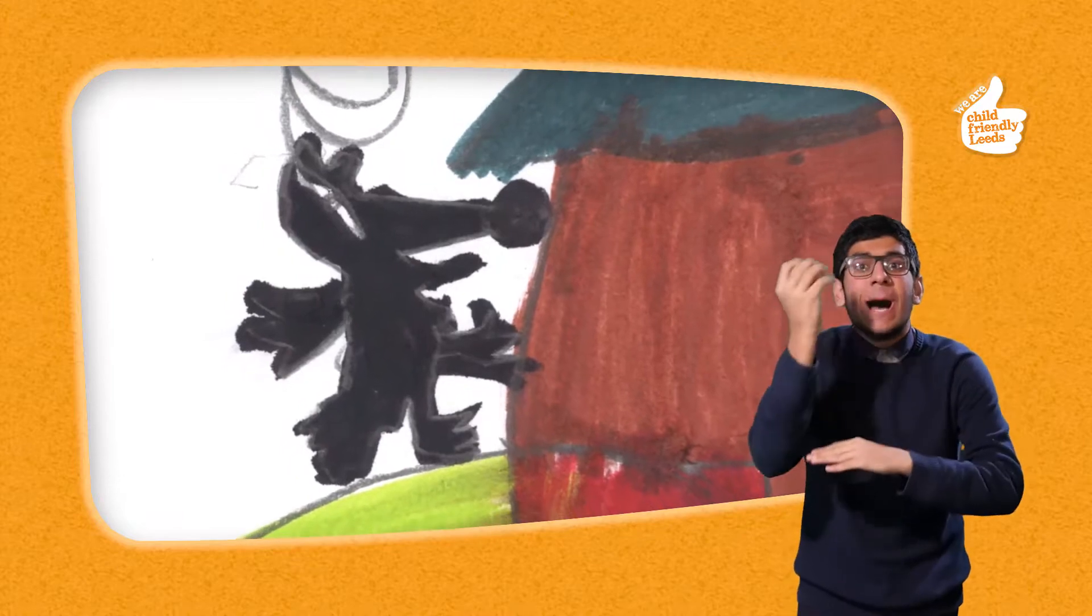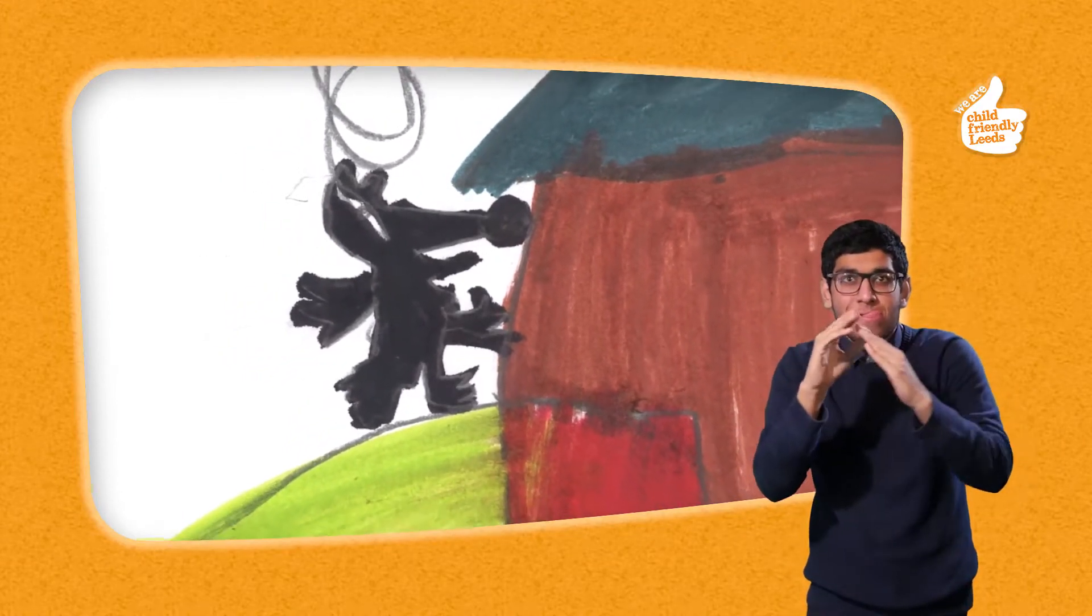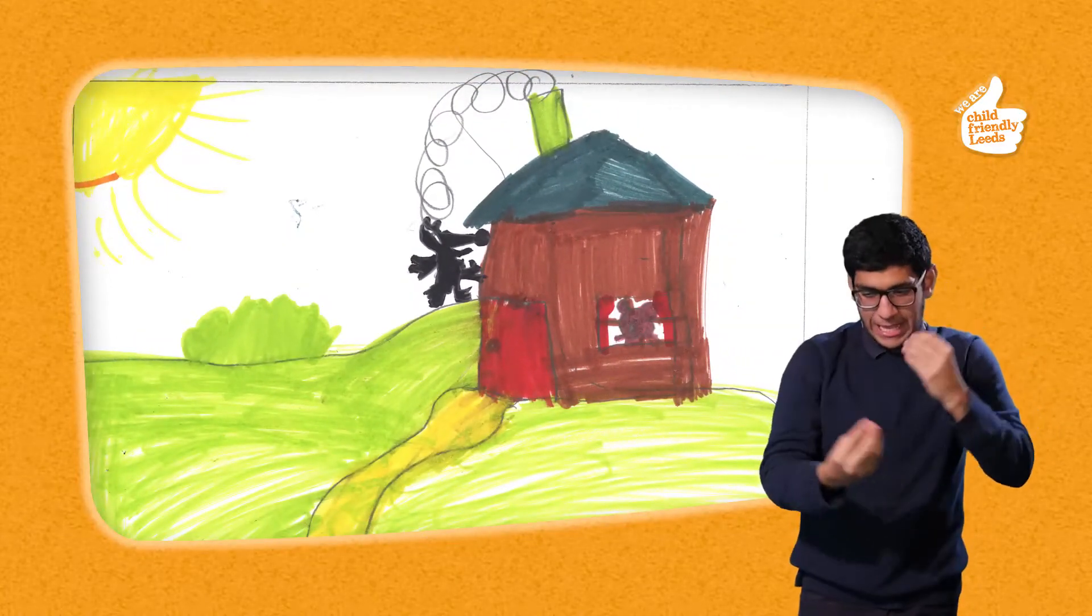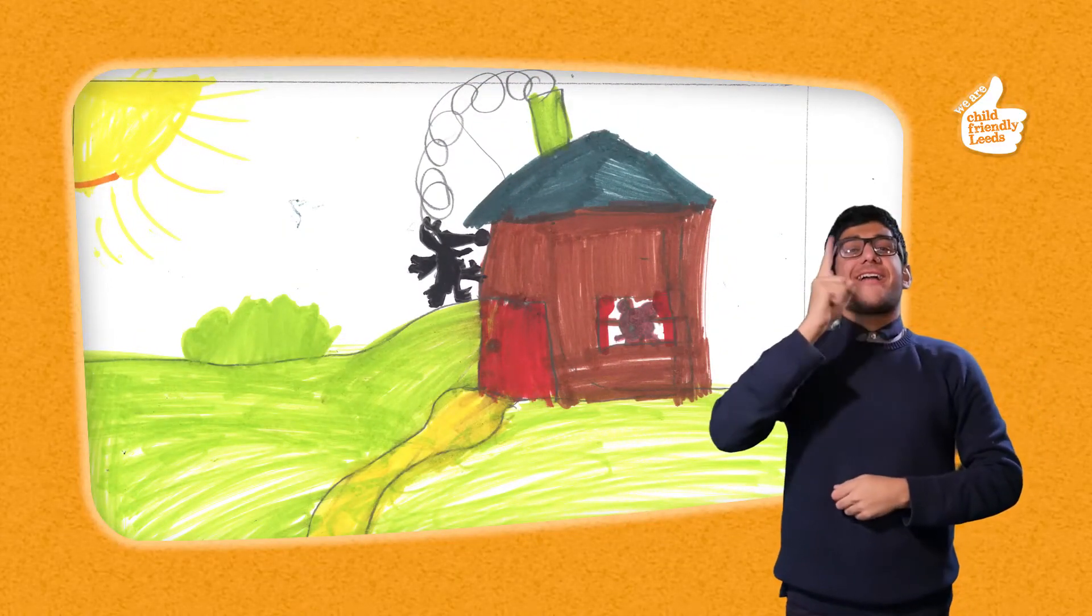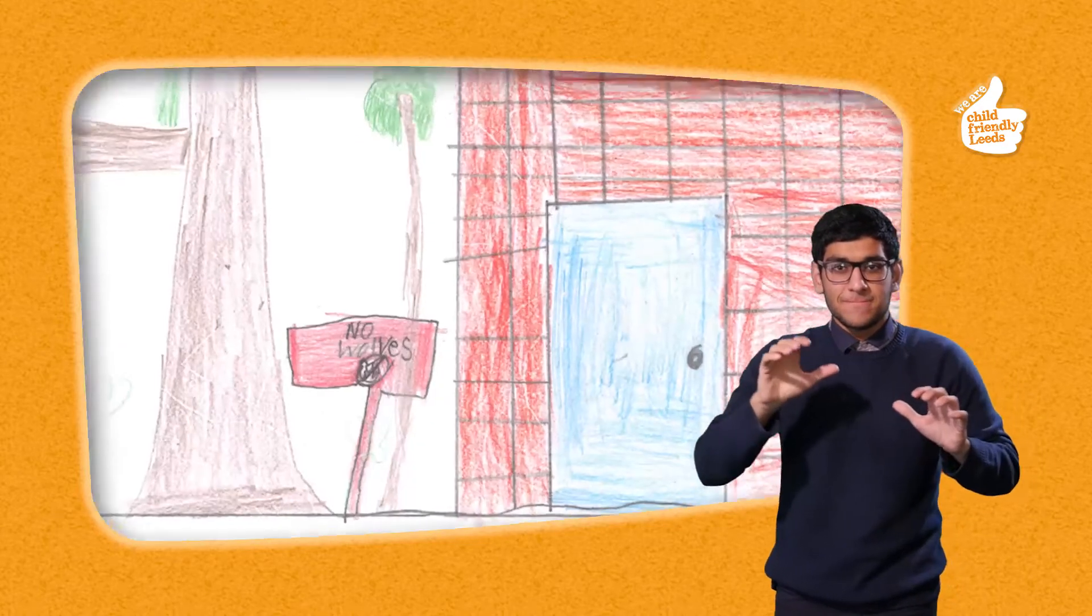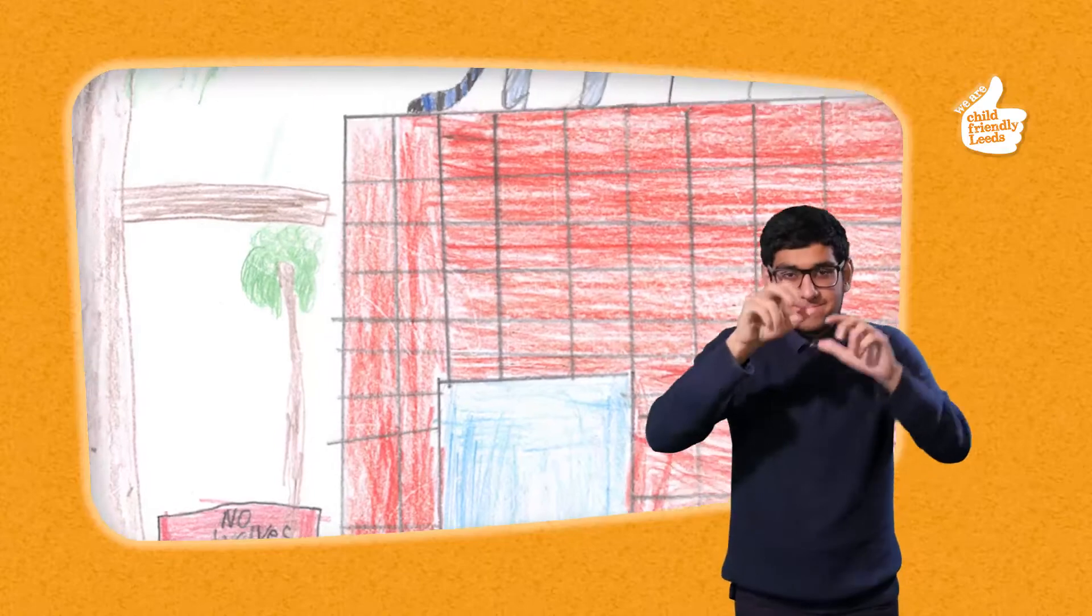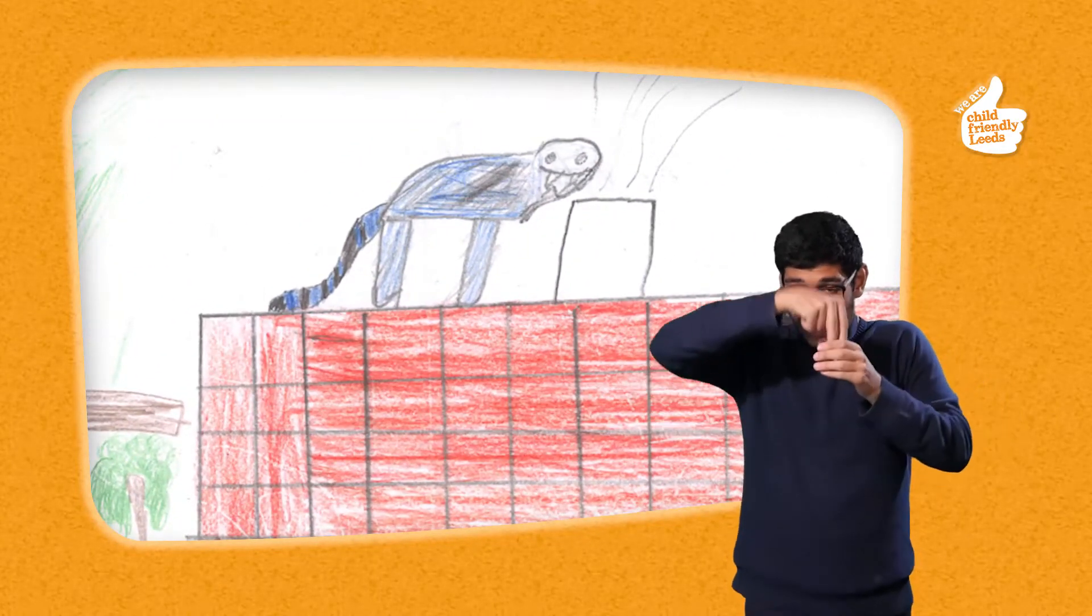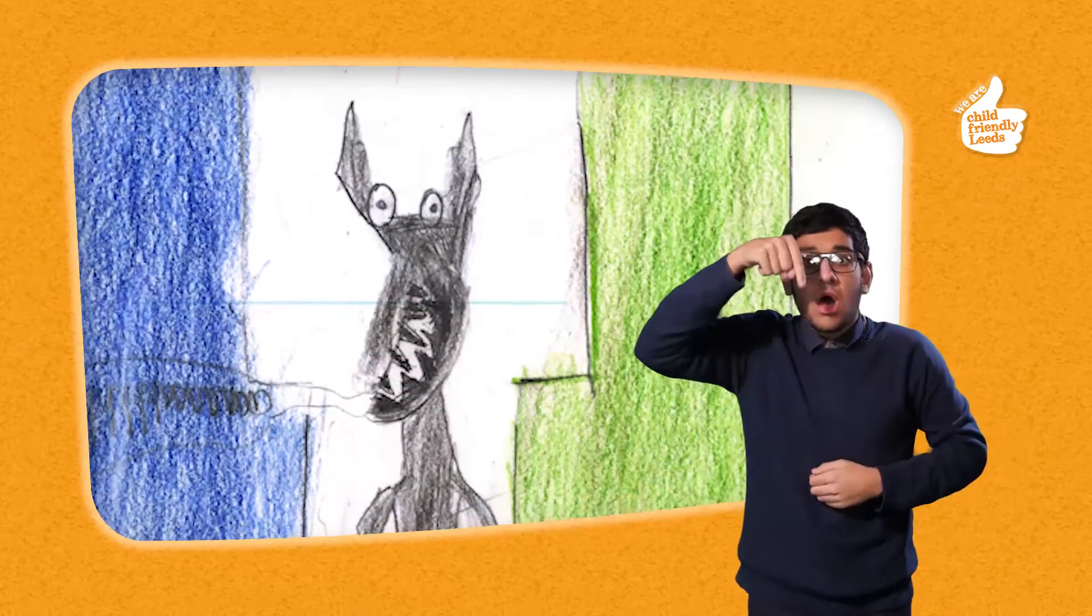Then he saw the chimney. I know. I can climb the house and get in through the chimney. And then eat all the little pigs. So he climbed up the walls, up the roof, got to the chimney. Oh, I'm so ready for these pigs. Went down the chimney.